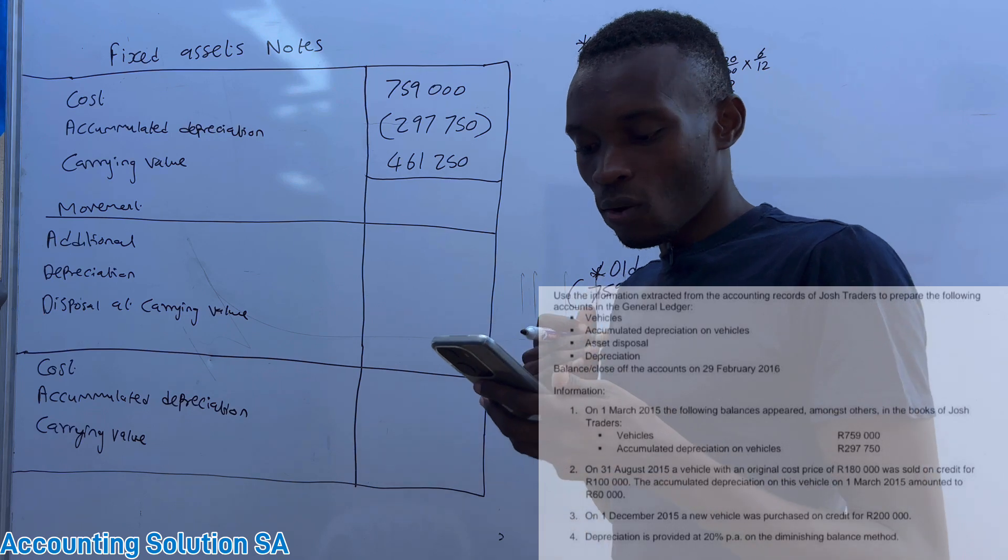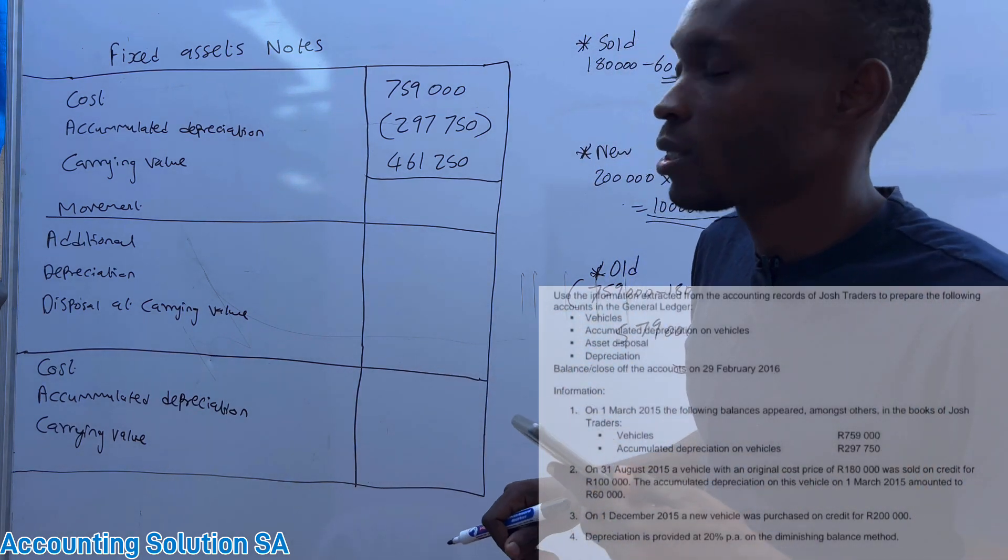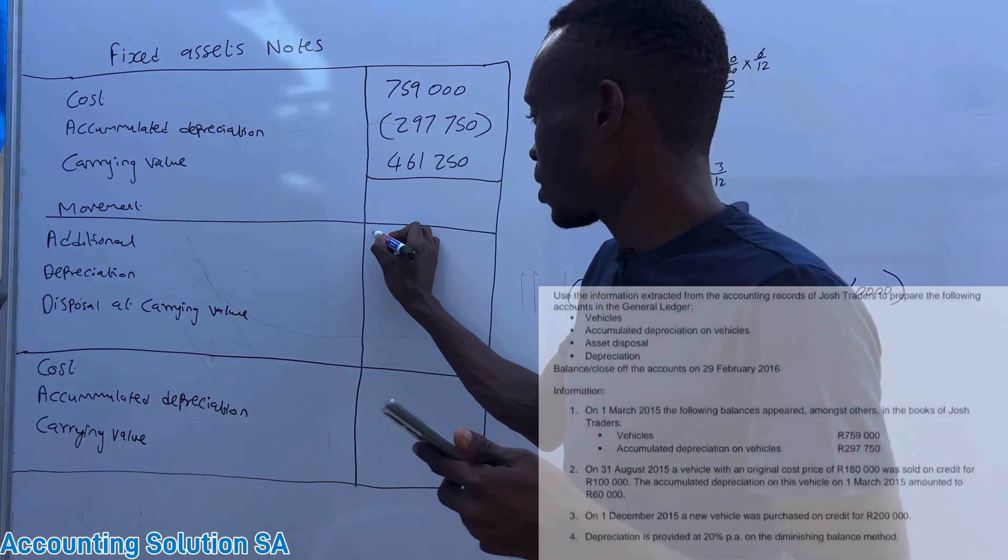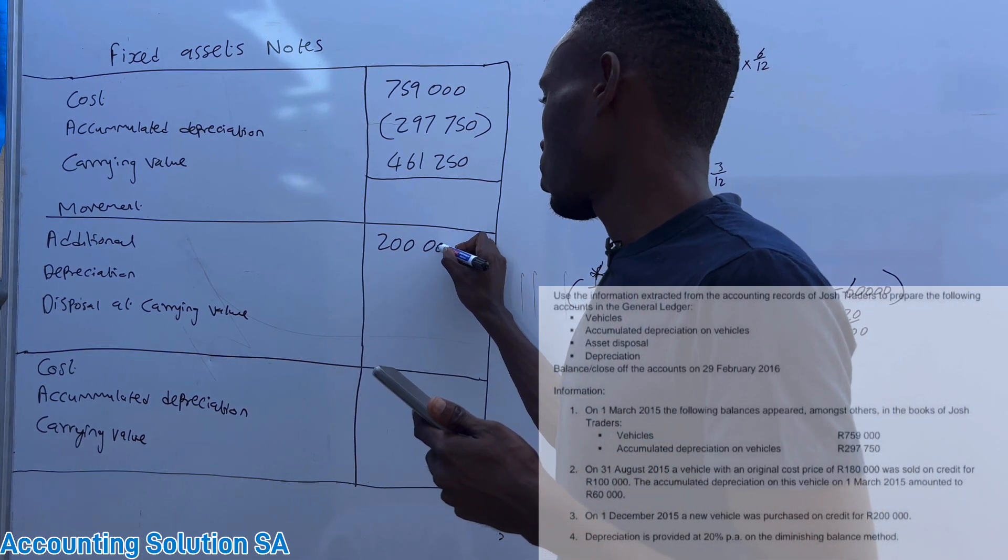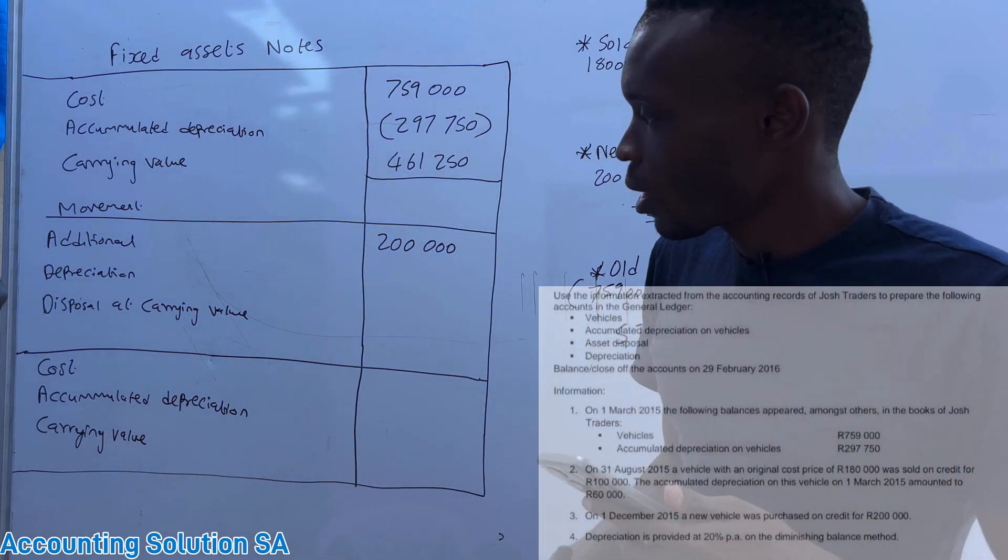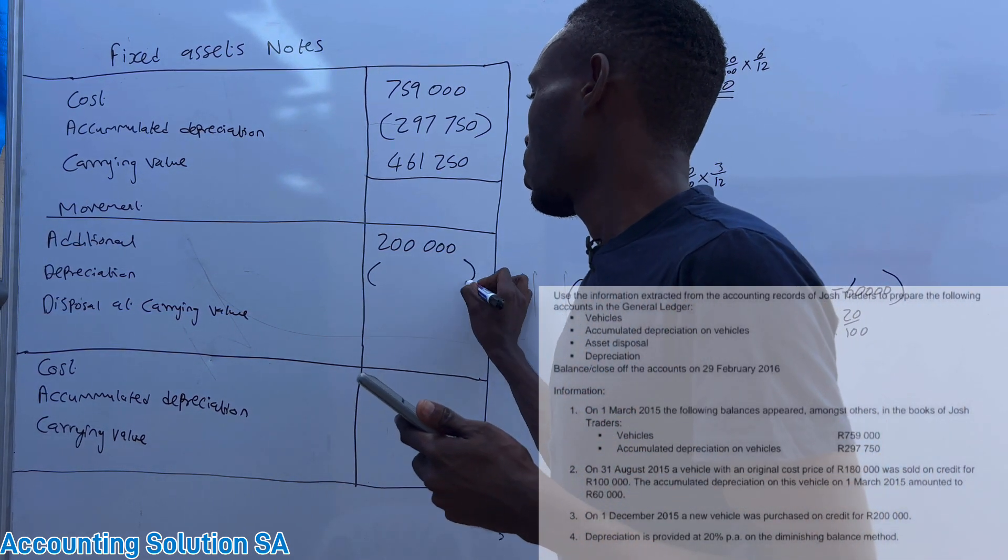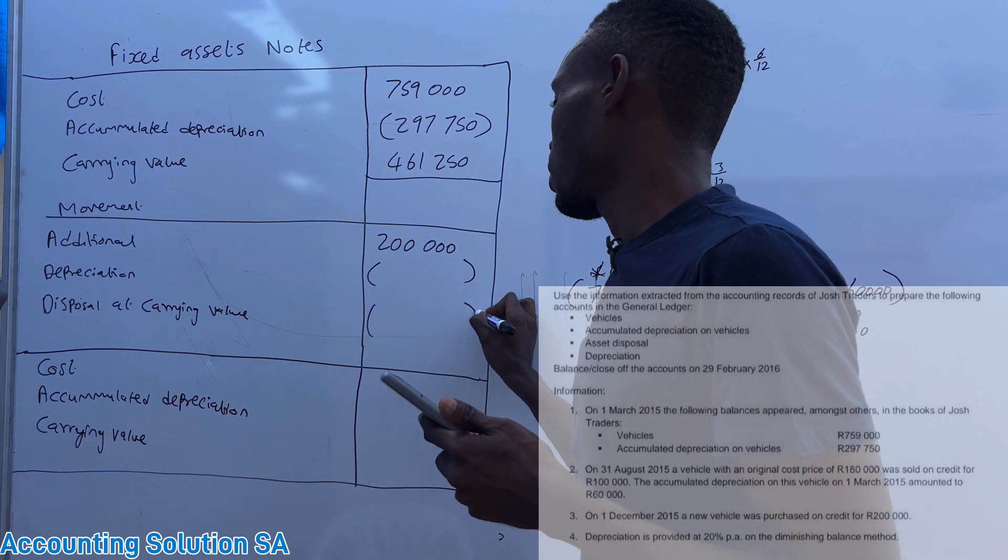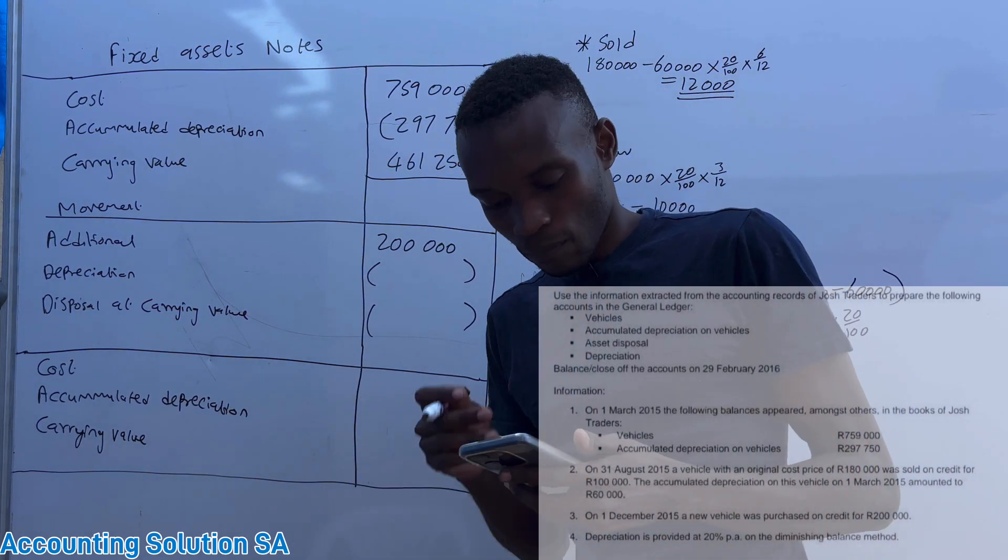On 1 August 2015 a new vehicle was purchased on credit by 200,000. It's additional, we just recorded as it is as 200,000, and it must be positive. Only depreciation and the disposal must be in the brackets to indicate that they are going out.